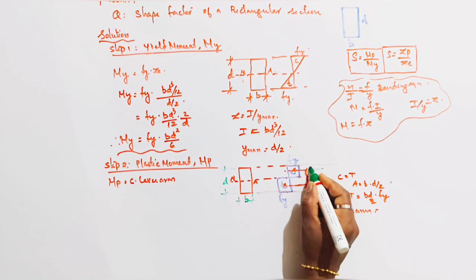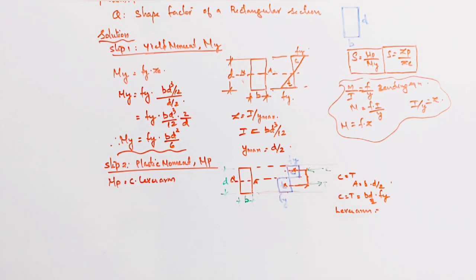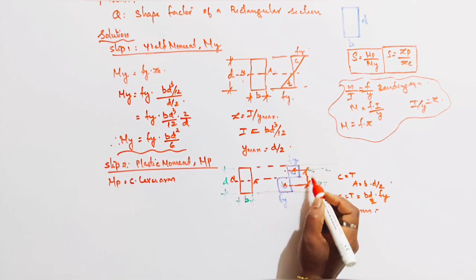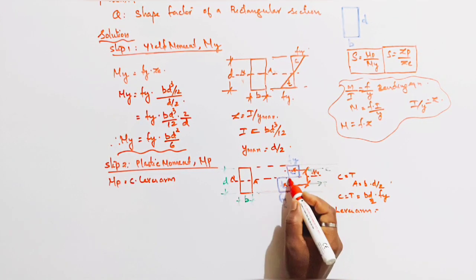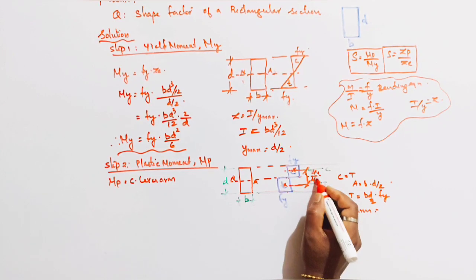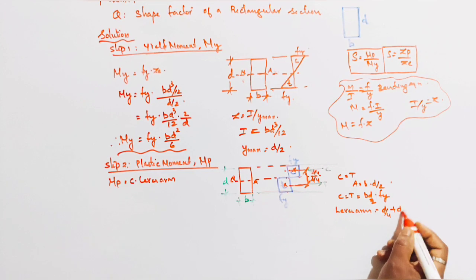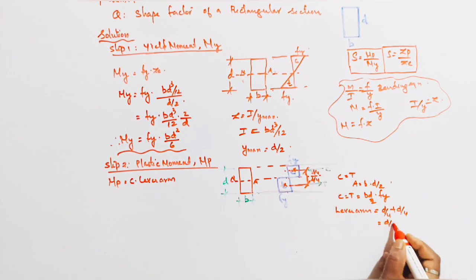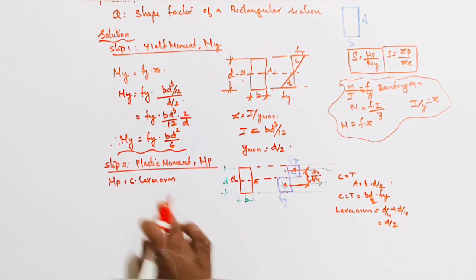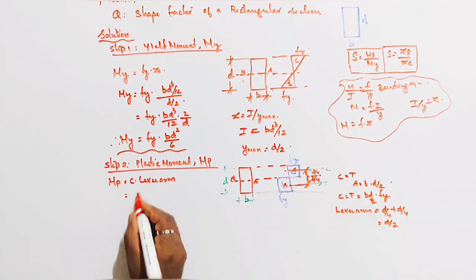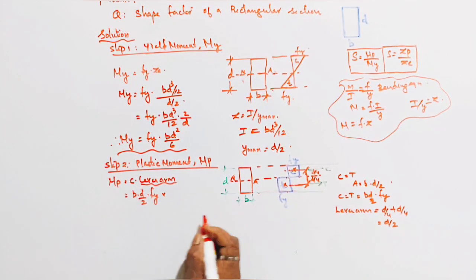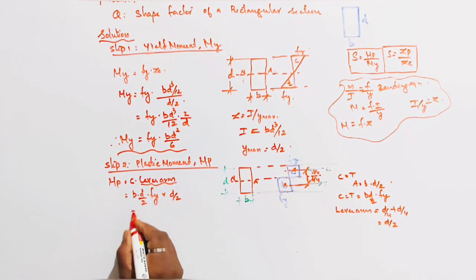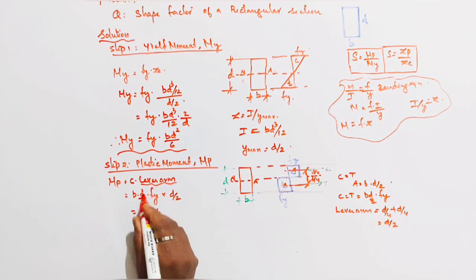This is tension and this is compression. The distance from CG to CG, D by 2 by 2, that means D by 4. D by 4 from here. So total D by 4 plus D by 4, 2 times D by 4, that is D by 2. Clear? Yes. So, C or T, that is B into D by 2 into Fy into lever arm distance, that is D by 2. So Fy into B into D², 2 times 2 is 4.